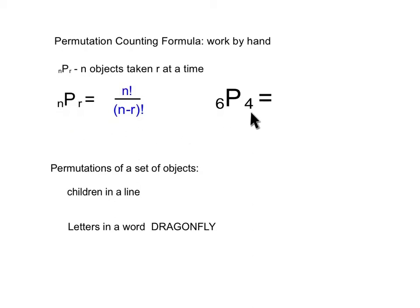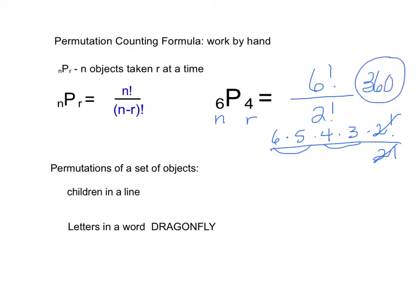So I have six objects. I want them four at a time, and order matters. So to do this problem, I'm going to take this is going to be n and this is r. Notice that that's alphabetical, n comes before r. So I have six factorial over n minus r factorial, six minus four is two factorial. That's going to be six times five times four times three times two factorial over two factorial. Those cancel. And I have 12 times 30, which is 360. Please write these down. The more you work them, the more you remember the formula.